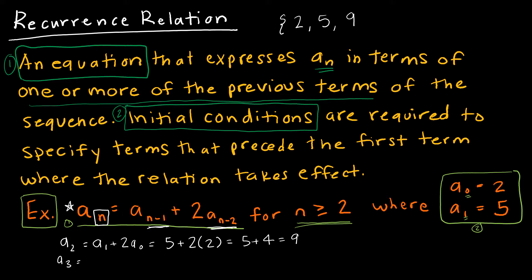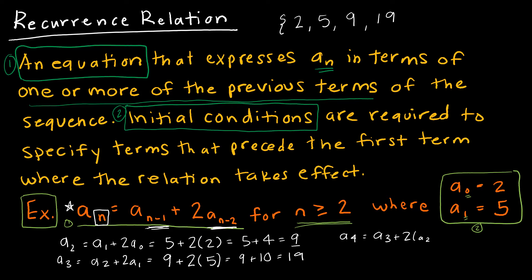For a(sub 3), the equation gives a(sub 2) + 2 * a(sub 1) = 9 + 2*5 = 9 + 10 = 19. Continuing, a(sub 4) = a(sub 3) + 2 * a(sub 2) = 19 + 2*9 = 19 + 18 = 37. We can see exactly how to find each additional term in the sequence.